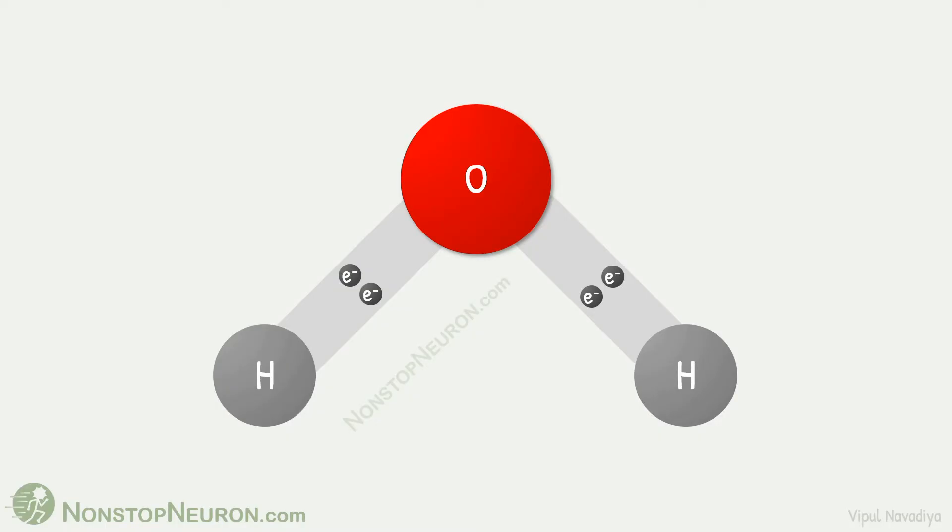The story starts with understanding chemistry of water molecule. In water molecule, one oxygen atom is bound to two hydrogen atoms by covalent bond. Now oxygen attracts electron pair more strongly than does the hydrogen. So electrons are pulled towards oxygen atom. This gives oxygen partial negative charge and hydrogen atoms partial positive charge.